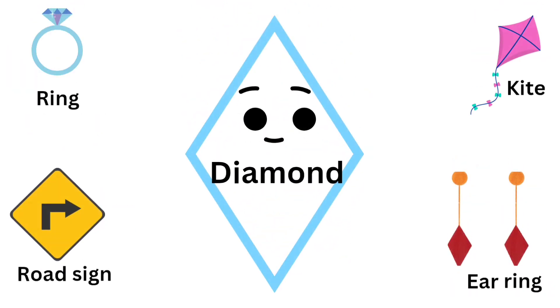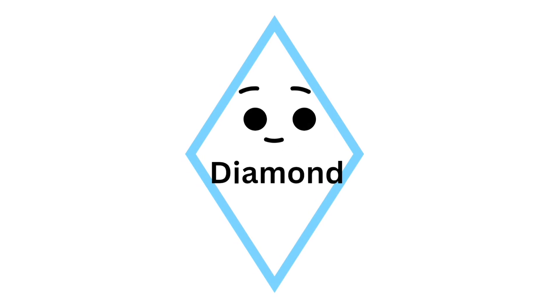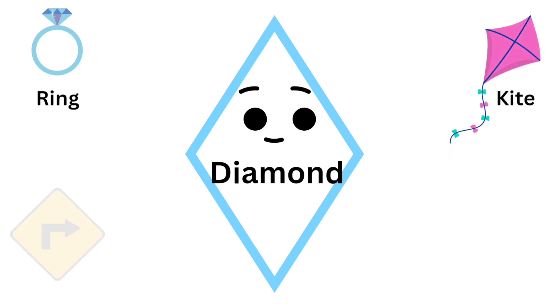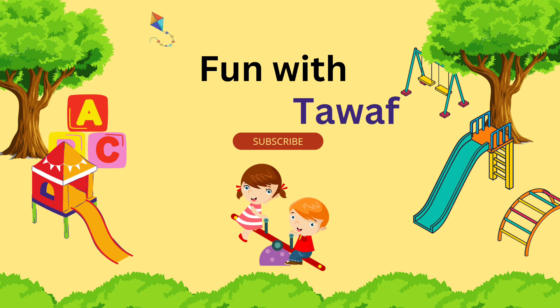Diamond shape — now look at some objects which are in diamond shape: diamond ring, kite, flower sign, ring. Thanks for watching! Don't forget to subscribe to my channel. Goodbye!